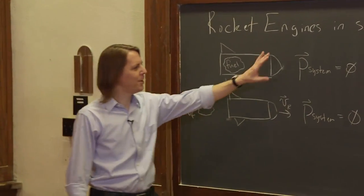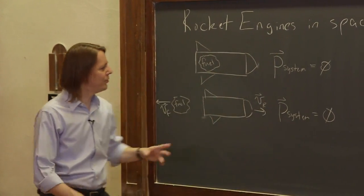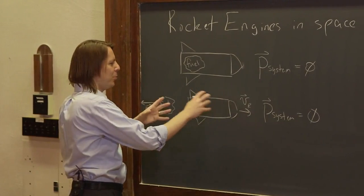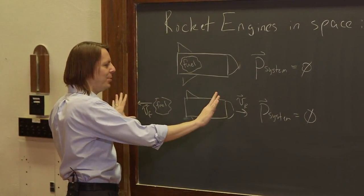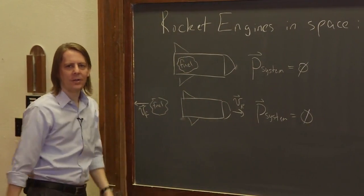For two reasons. One, momentum has to be conserved. And two, if you look at how it could be zero, remember it's a vector quantity. They both pick up a speed, they both pick up a momentum, but since momentum is a vector, they can still cancel.